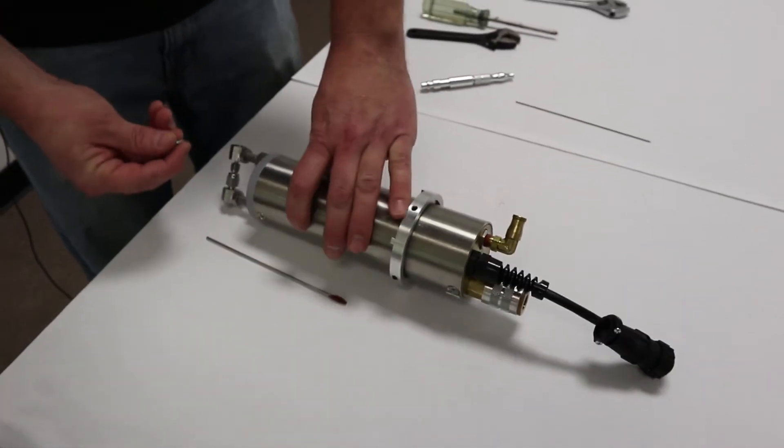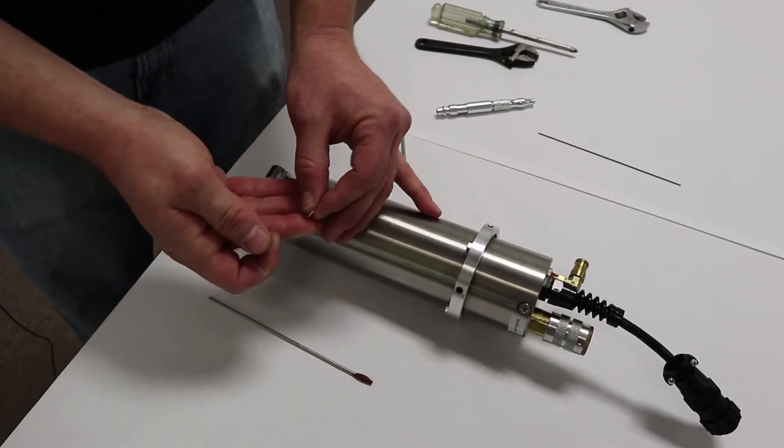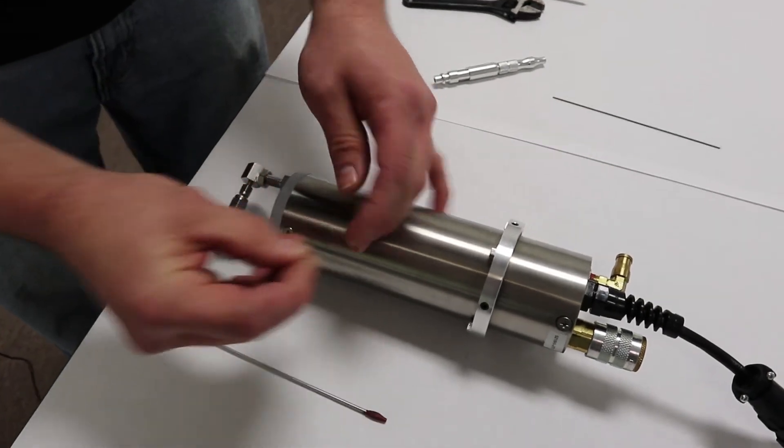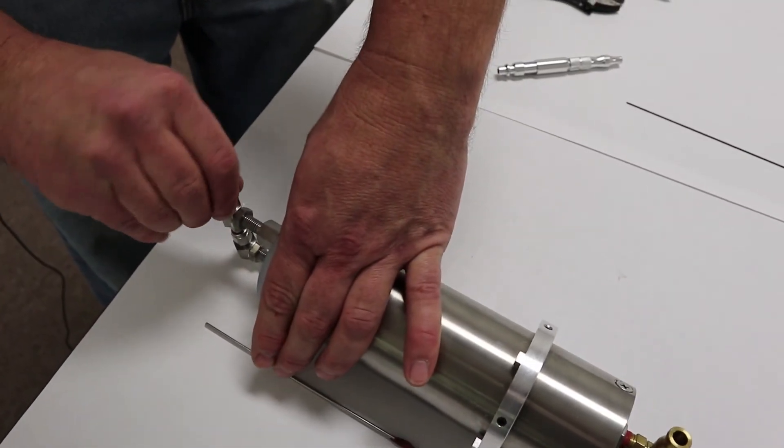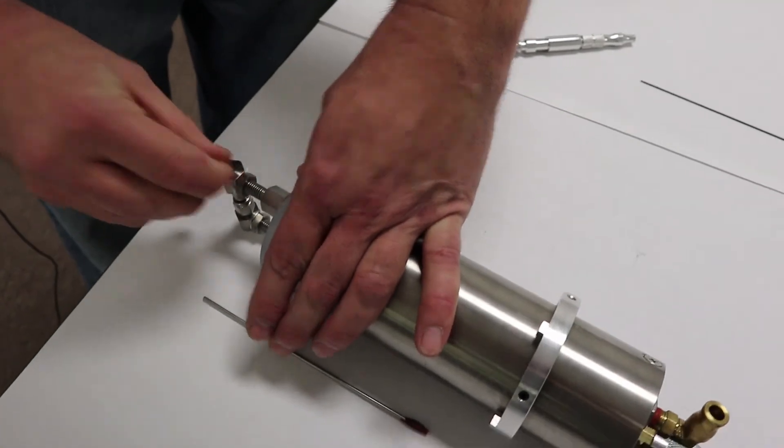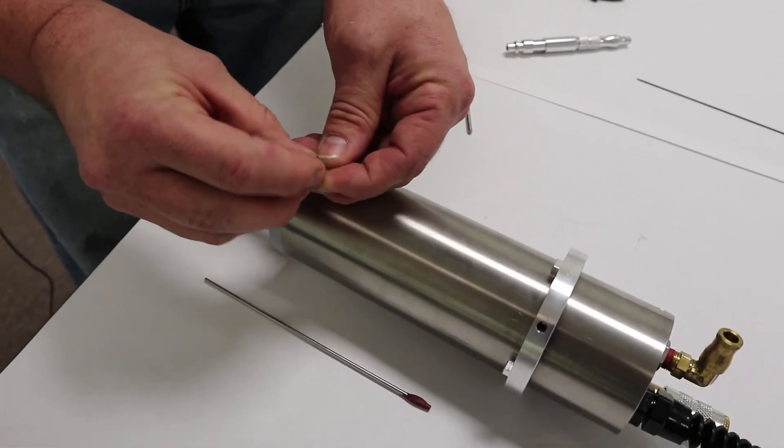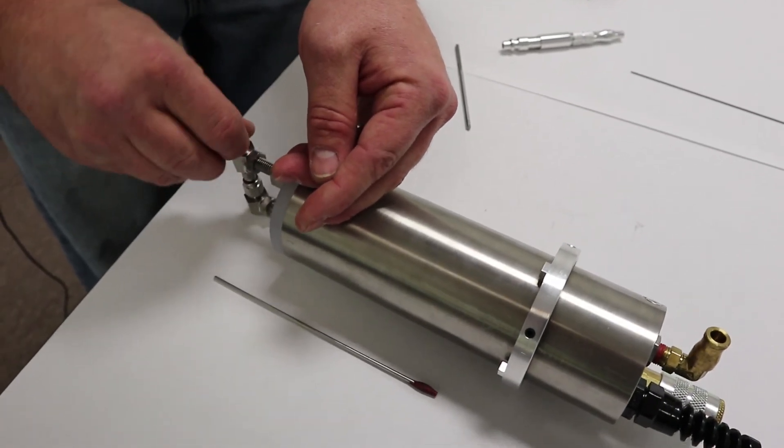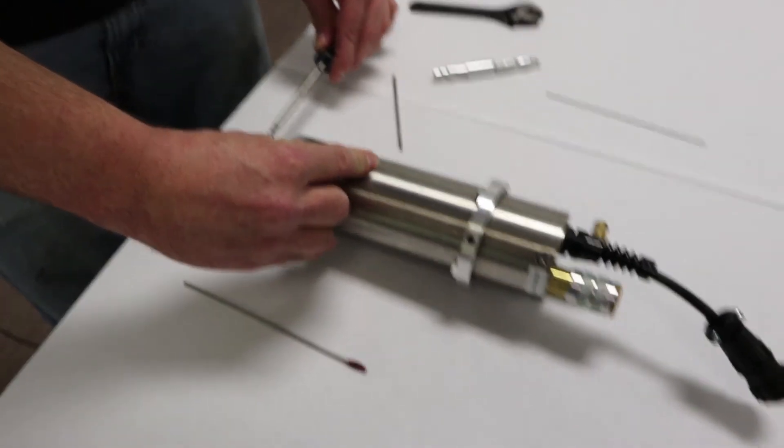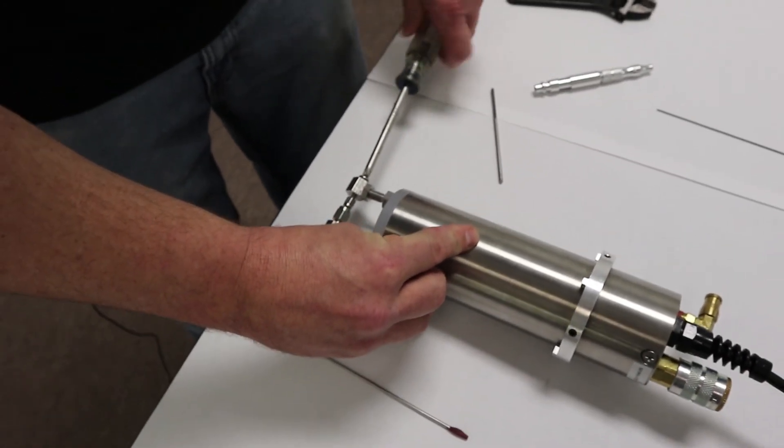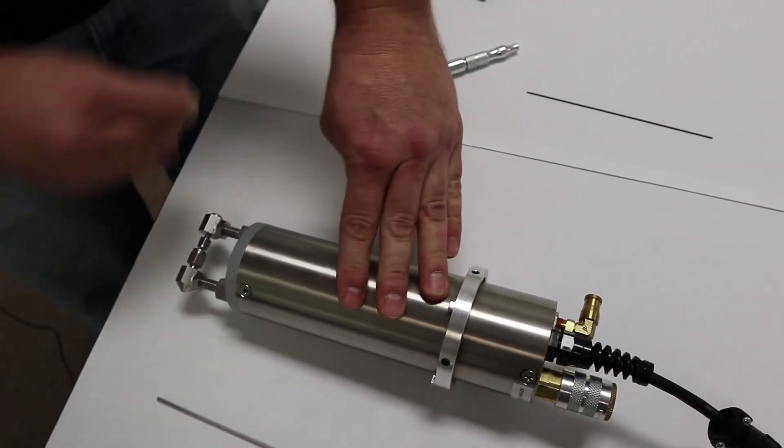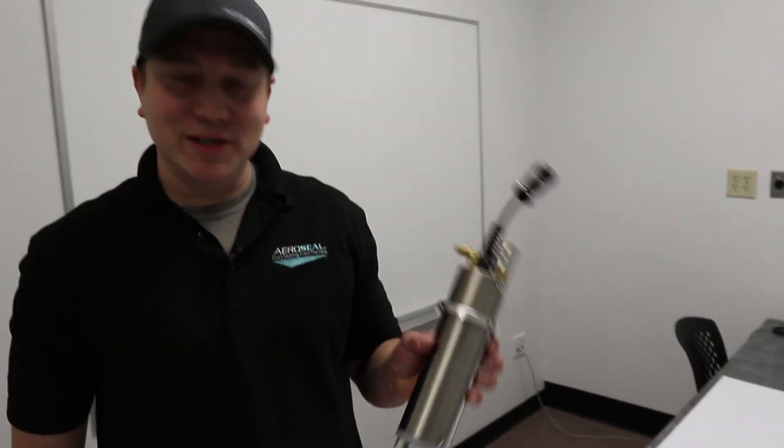So once we got that, everything's nice and tight now. We're going to go ahead and put the back screw on. And you should have a Teflon washer too. You just want to put that in there, and then just screw it down. Give it nice and snug. And then there, everything should be back together. And that's how a wand is taken apart and put back together.